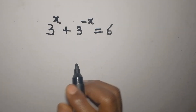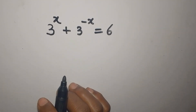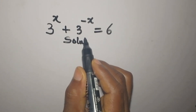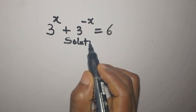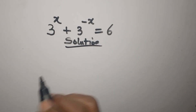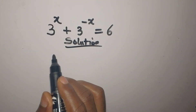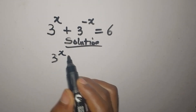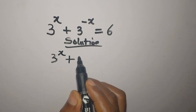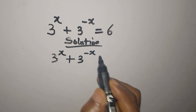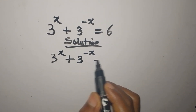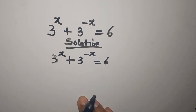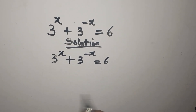Hello everyone, let's provide a solution to this problem very quickly. We have 3 to the power of X plus 3 to the power of negative X equals 6. How do we deal with this problem?